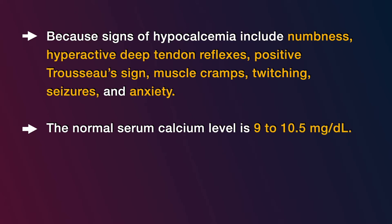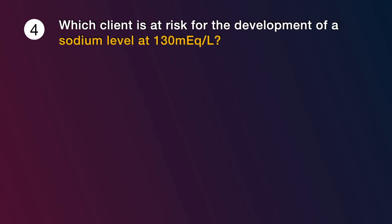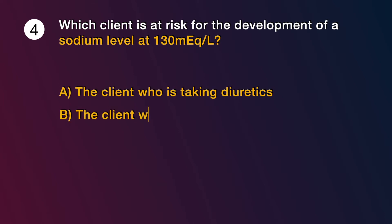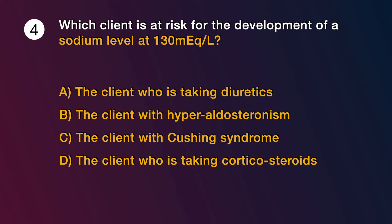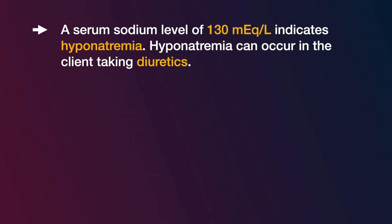The normal serum calcium level is 9 to 10.5 mg per deciliter. A serum calcium level lower than 9 mg per deciliter indicates hypocalcemia. Question number 4: Which client is at risk for development of a sodium level of 130 milliequivalents per liter? Options are: A) the client taking diuretics, B) the client with hyperaldosteronism, C) the client with Cushing syndrome, D) the client taking corticosteroids. The answer is A, the client taking diuretics. A sodium level of 130 milliequivalents per liter indicates hyponatremia. Clients with hyperaldosteronism and Cushing syndrome are at risk for hypernatremia. The normal serum sodium level is 135 to 145 milliequivalents per liter.